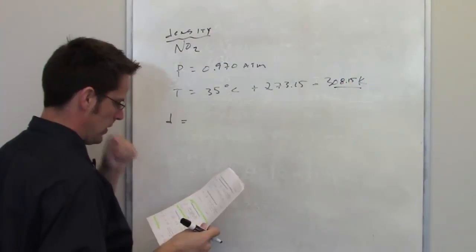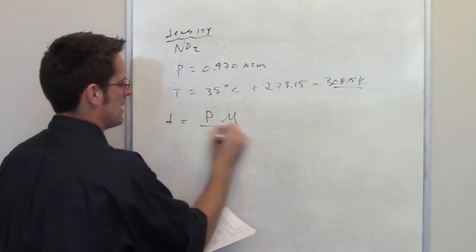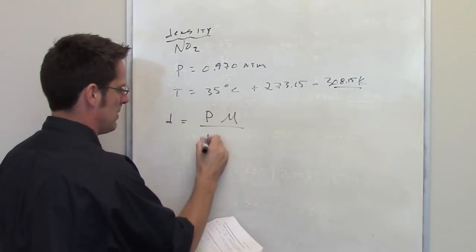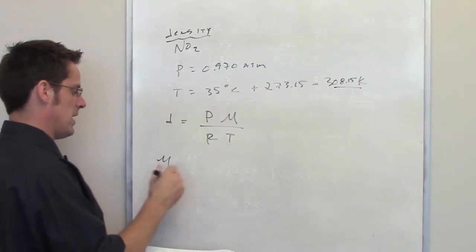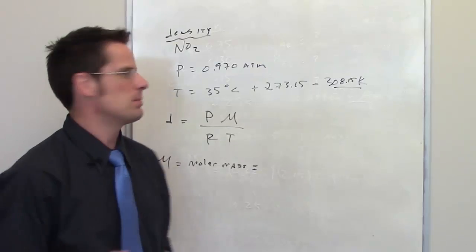According to the equation that I gave you earlier, density is equal to pressure multiplied by this fancy letter M divided by RT. The fancy letter M, by the way, is the molar mass, which you should be able to calculate pretty easily.